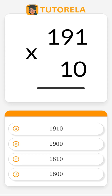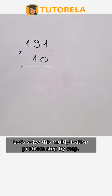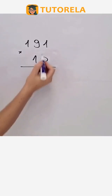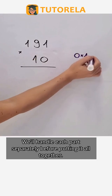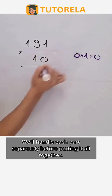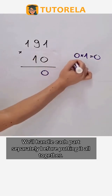What is the value of X given that X is on a vertical line with length equal to 191 and another segment with length equal to 10? Let's solve this multiplication problem step by step, handling each part separately before putting it all together.